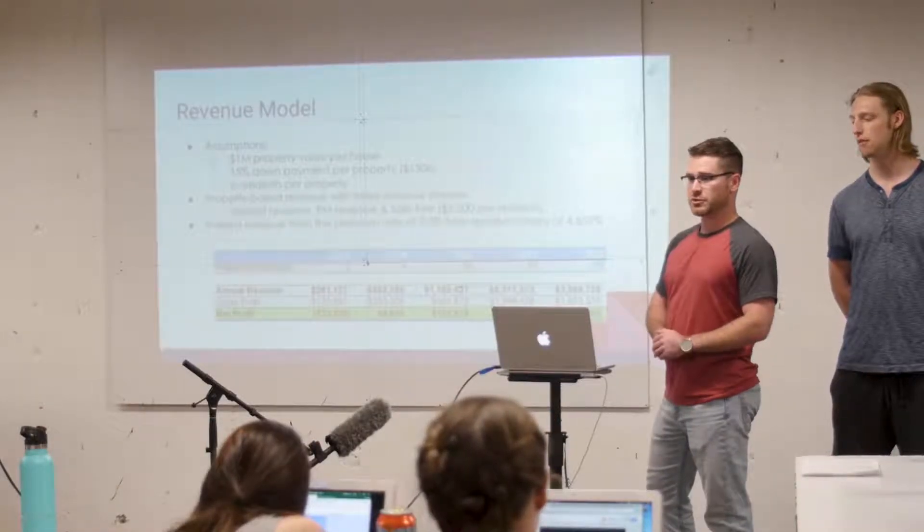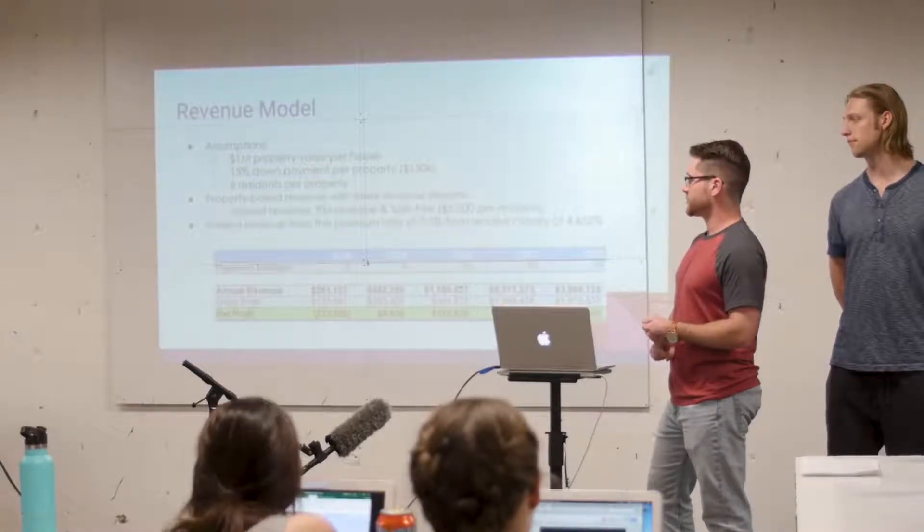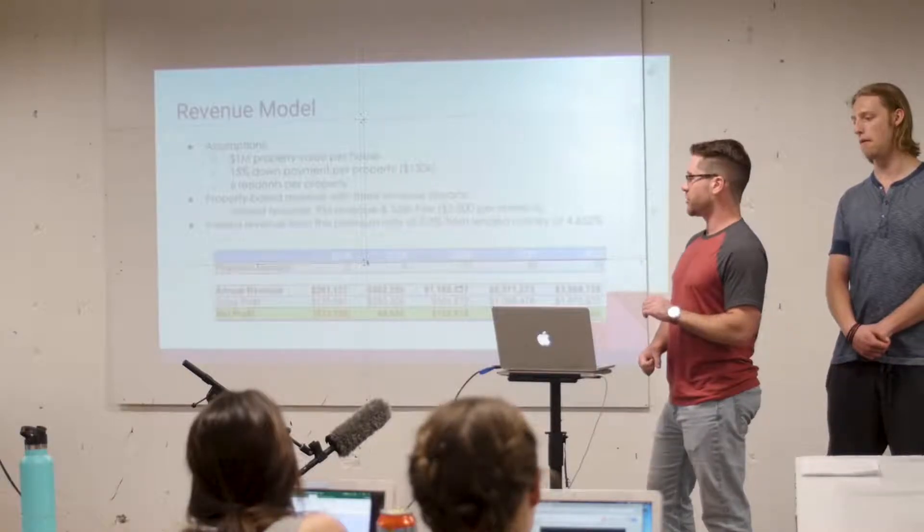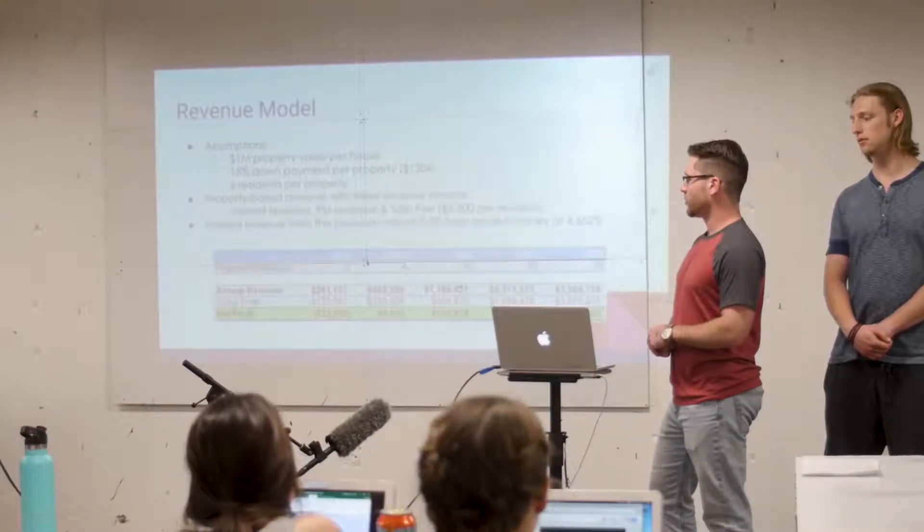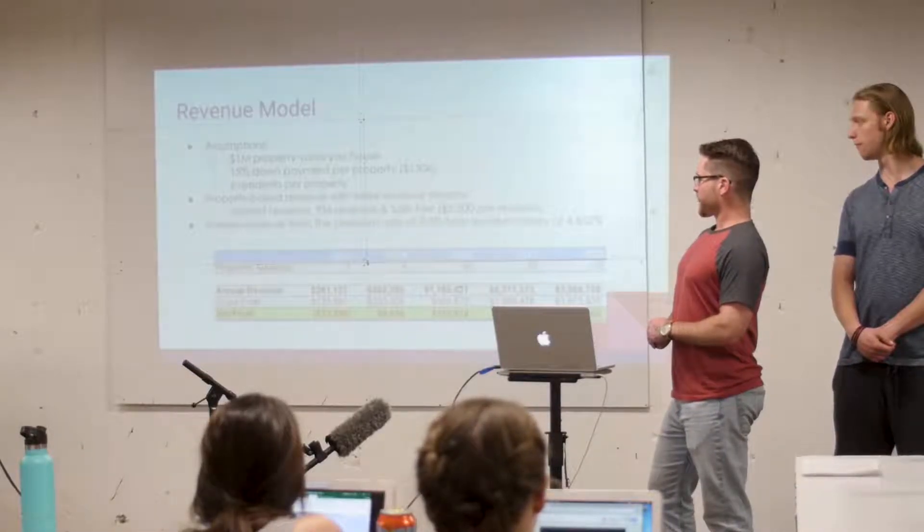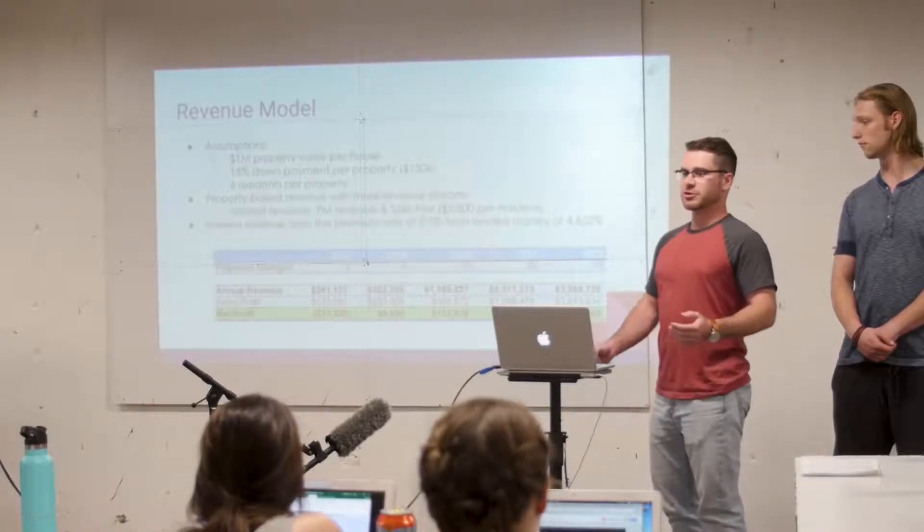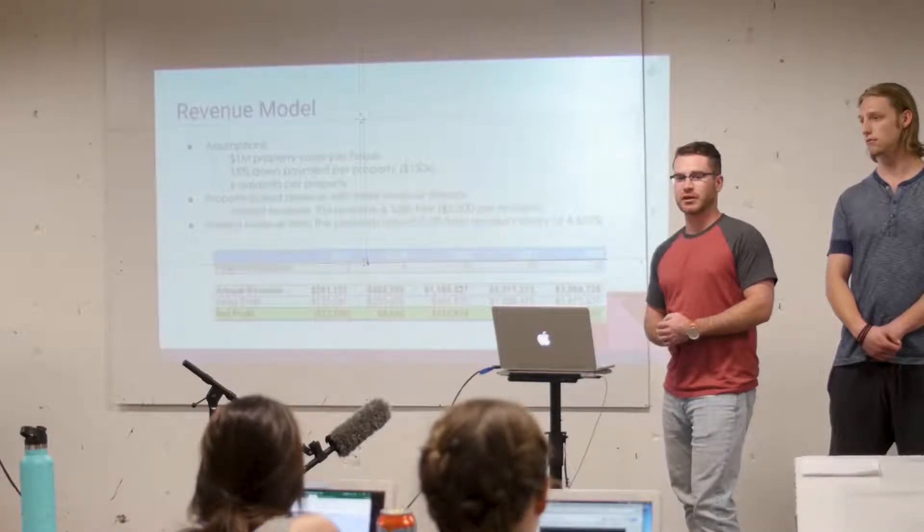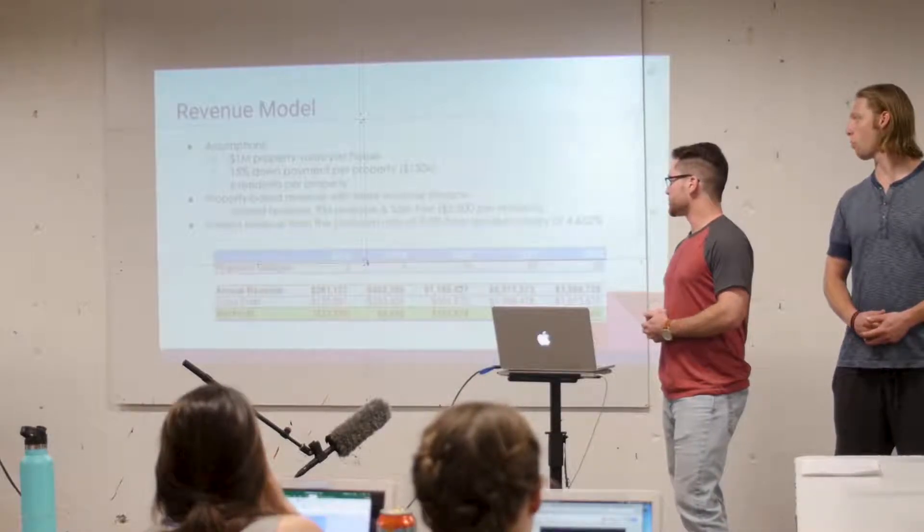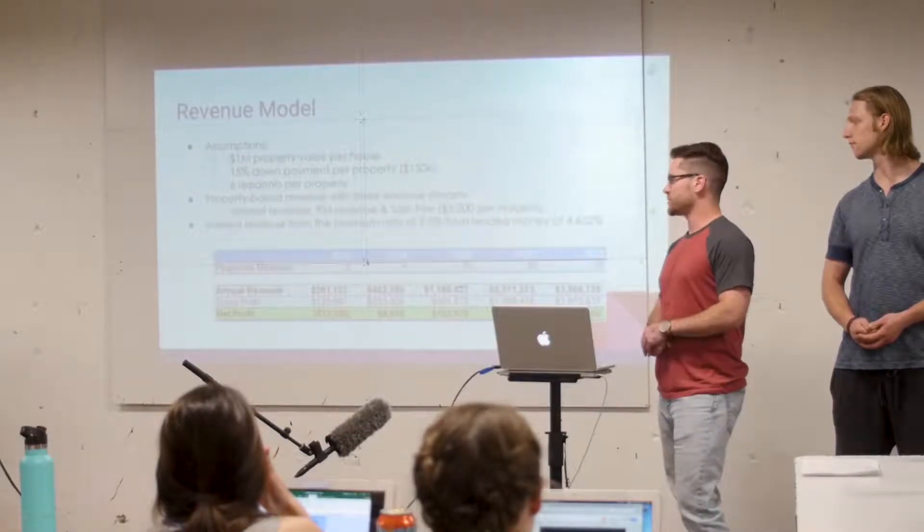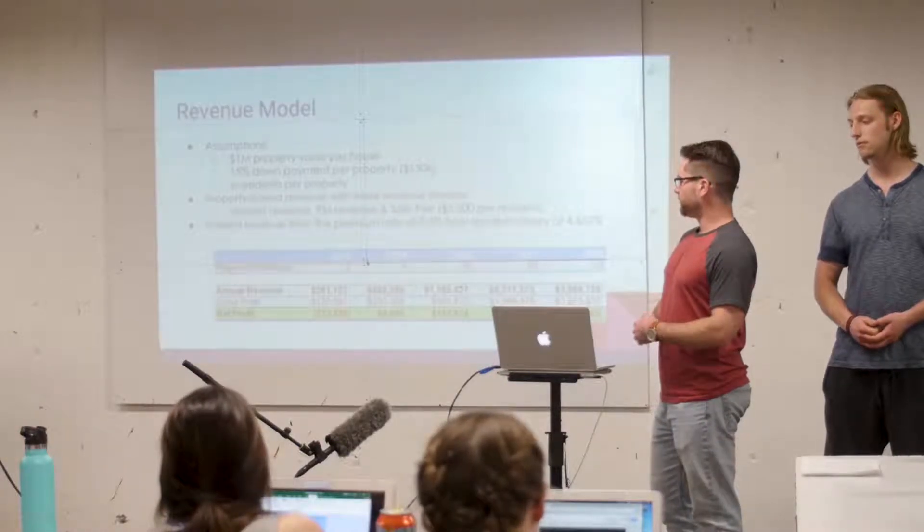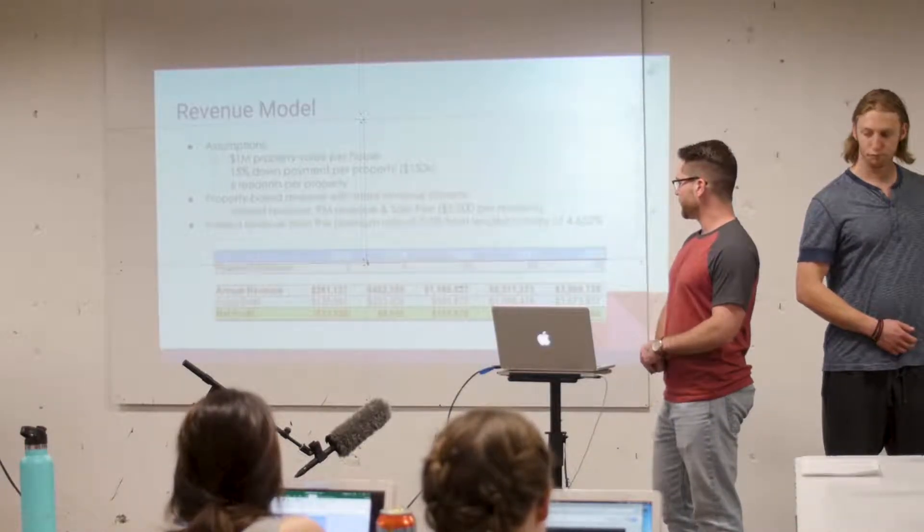We have three different revenue streams that we're going to be making money off of. The first is our primary interest revenue. So that's the 9% premium that we charge. And then our line of credit that we would be borrowing would be about four and a half to five percent. Property management revenue, we would just charge a monthly property management fee, like most of you guys probably pay already. And then a sale fee per resident and a property. So that'd just be $5,000 flat for a resident, which is kind of comparable to a security deposit.